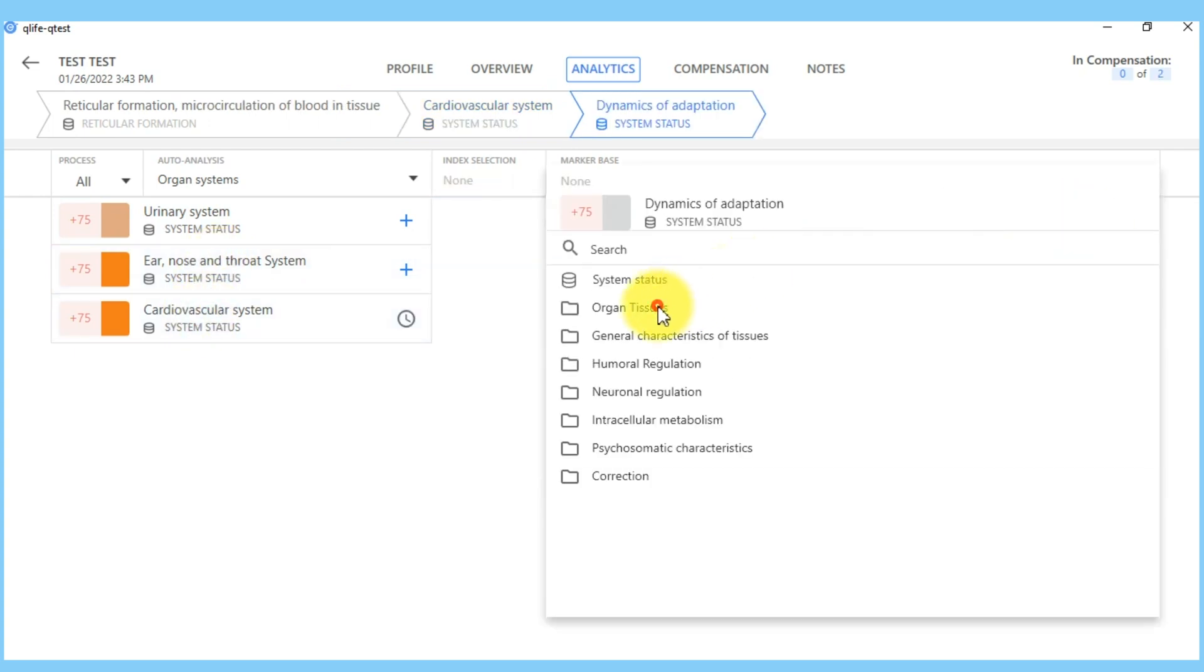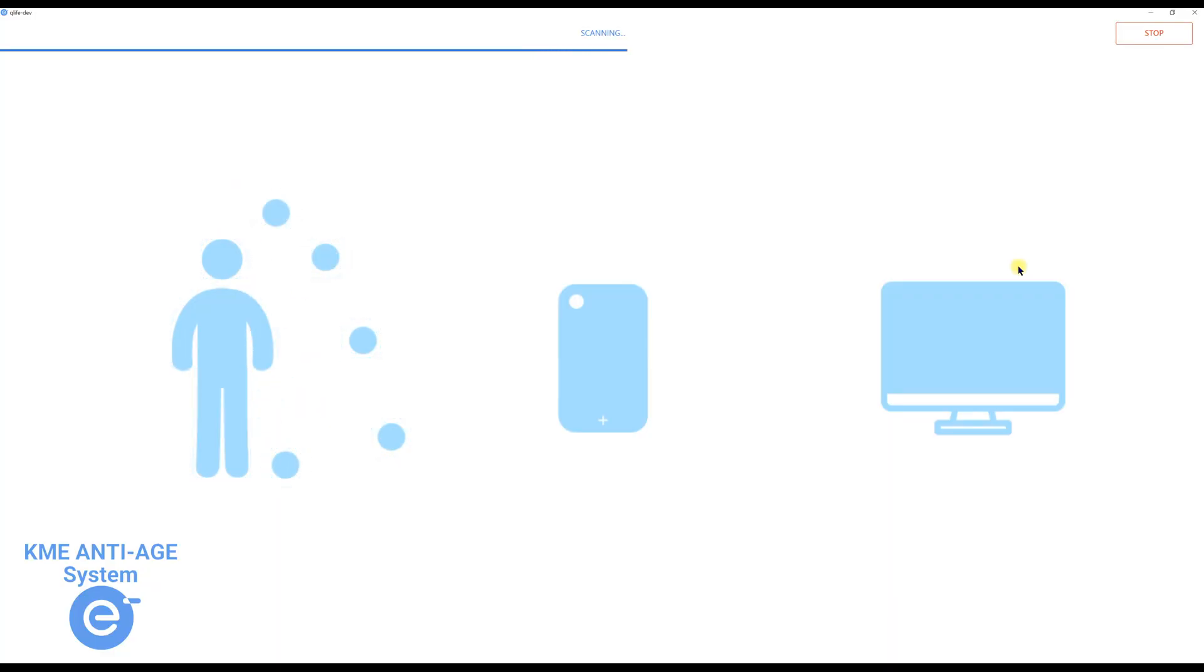The KME NTH system is a unique application program and a specialized USB sensor for easy screening. The first step is an in-depth assessment of the body, either general or for a specific problem.